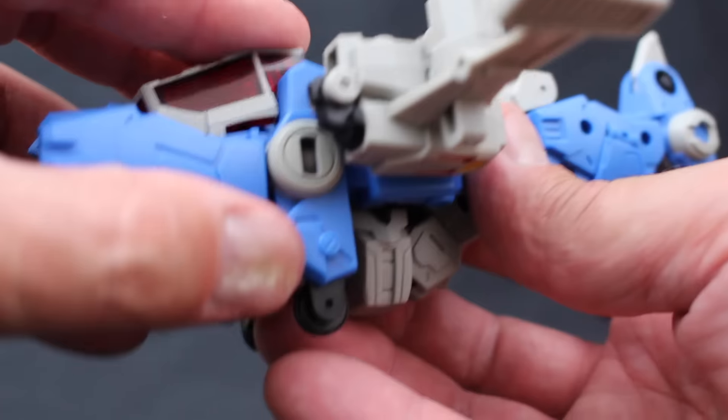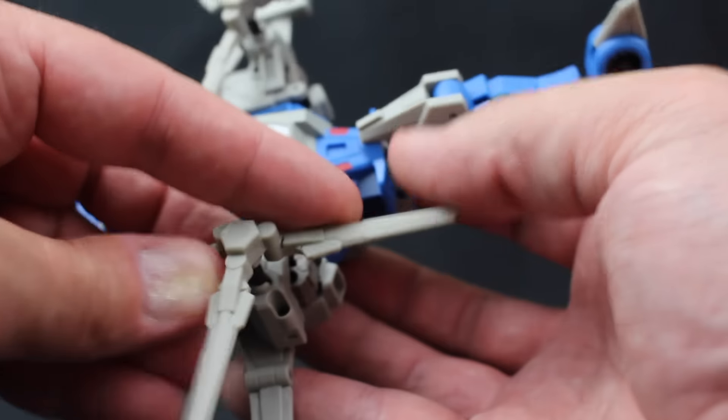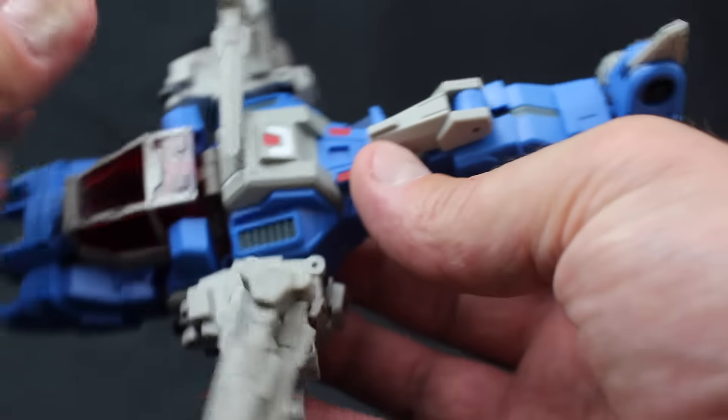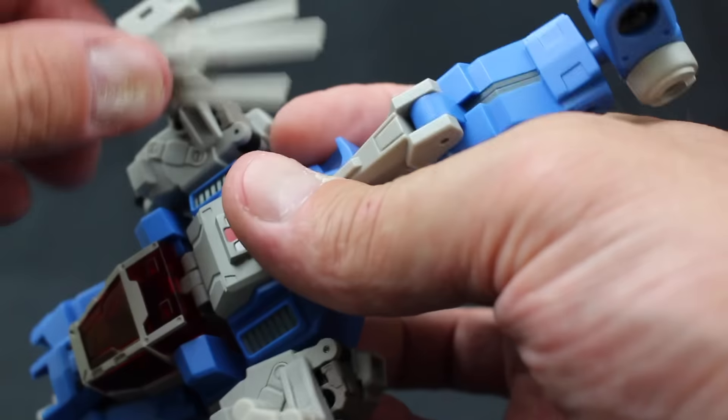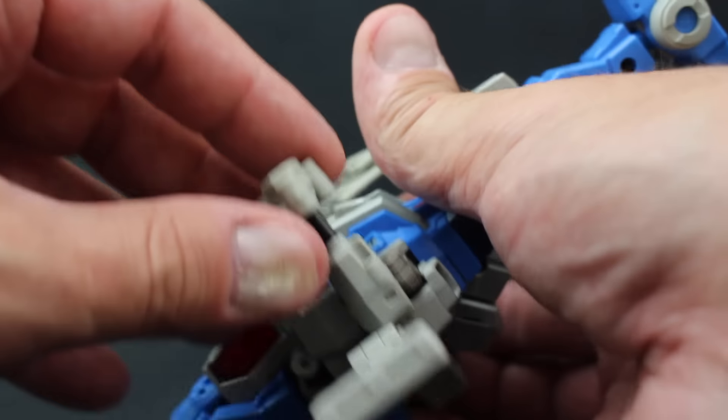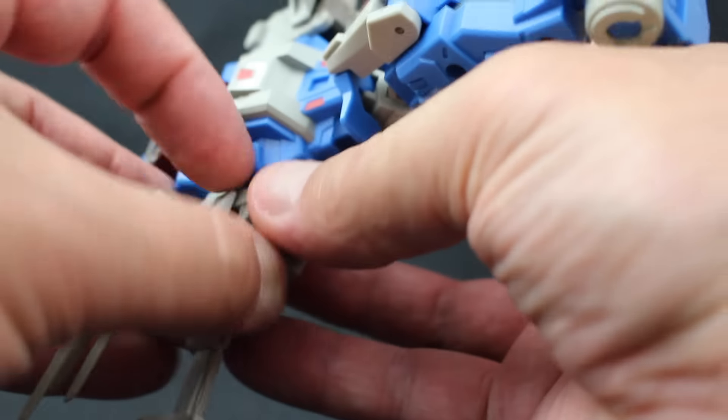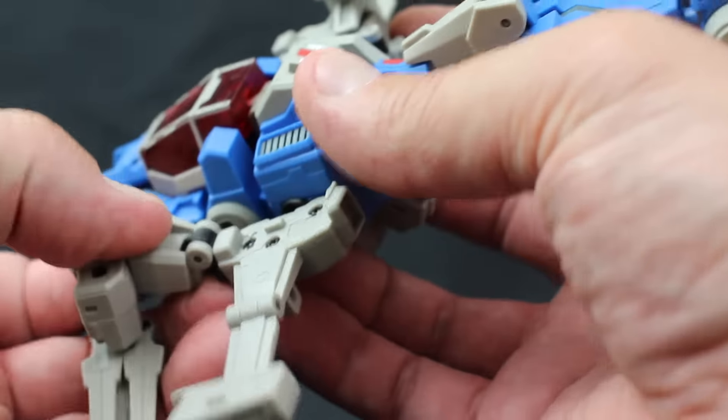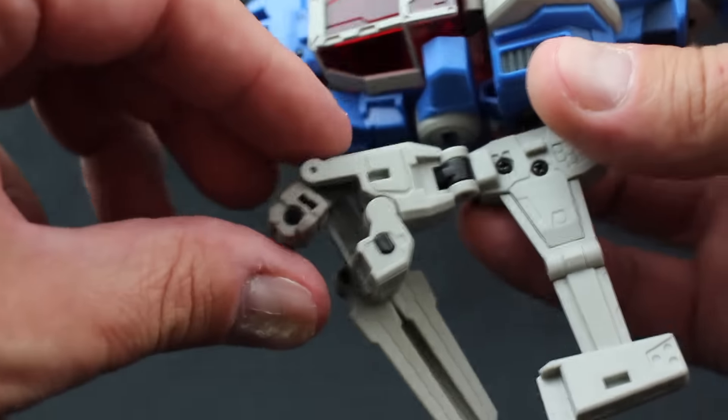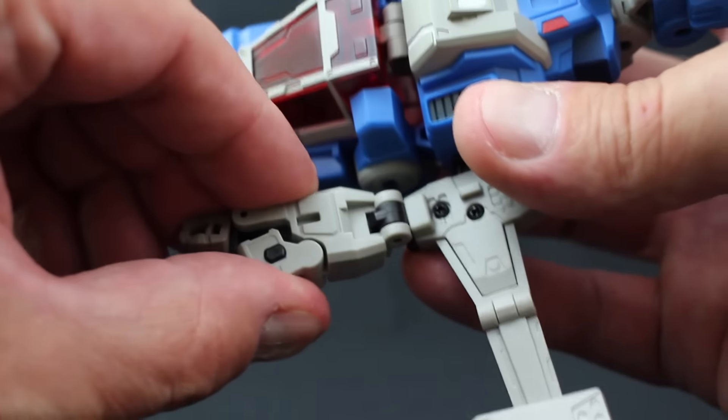Transforming the wings and rotor blades into the arms involves a unique way to reveal the robot hands. A panel folds in to fill the space where the fist was in alt mode. When in alt mode, these wings are not tabbed into the body of the helicopter, which is not the end of the world, but it would have been nice to keep it more stable in alt mode.